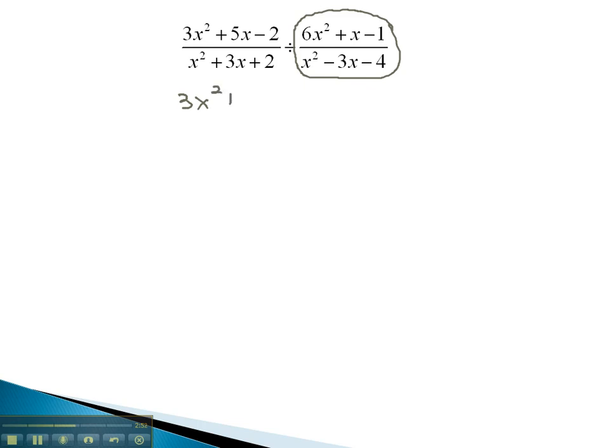So, what we have is 3x squared plus 5x minus 2 over x squared plus 3x plus 2, times x squared minus 3x minus 4 over 6x squared plus x minus 1.